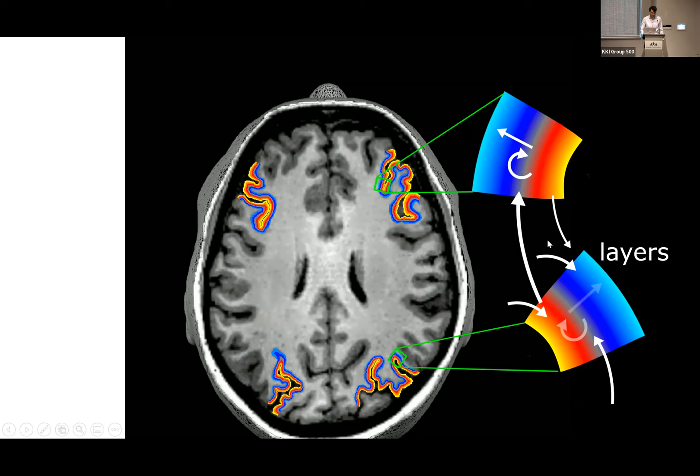Those layers are exciting because they contain different neurons that do different things in neural processing. Going from a conventional fMRI voxel of maybe three millimeters to submillimeter resolutions, you can start to spatially subsample these different neural populations. High-resolution layer-dependent fMRI does not only tell us which areas are connected and which connections are stronger, but importantly it tells us something about the directionality and causality of these connections.